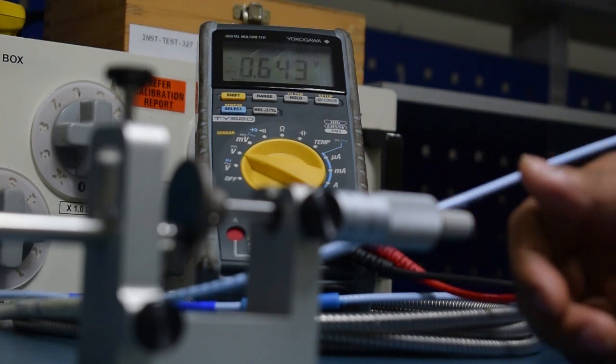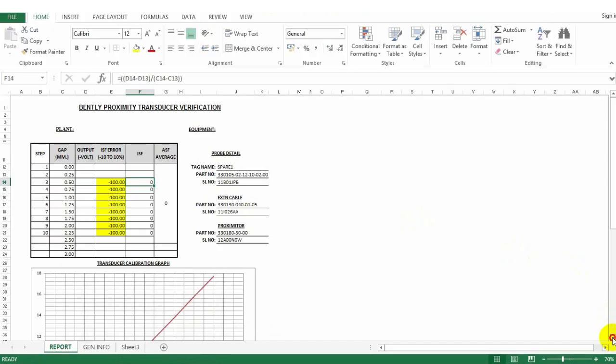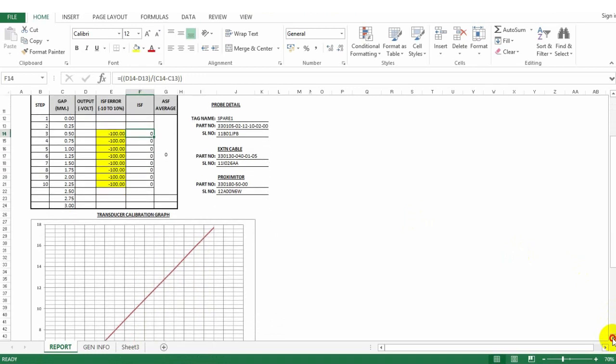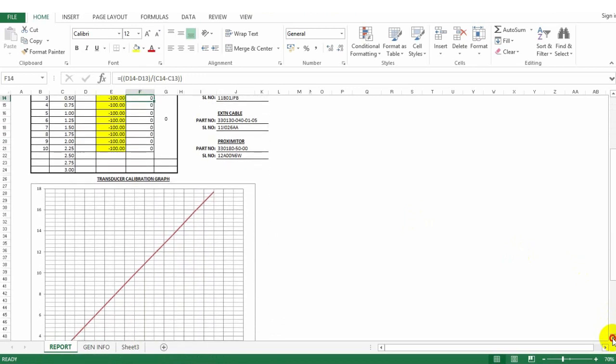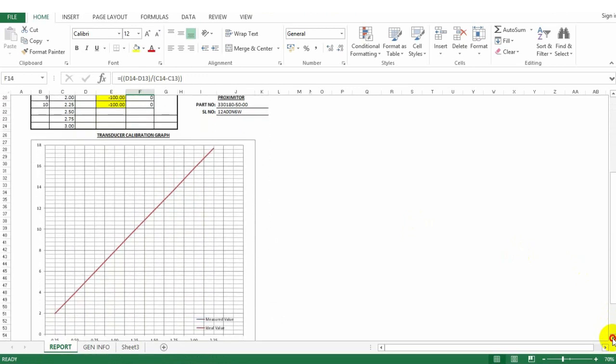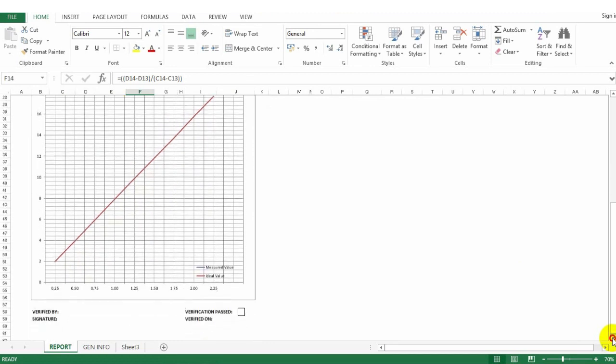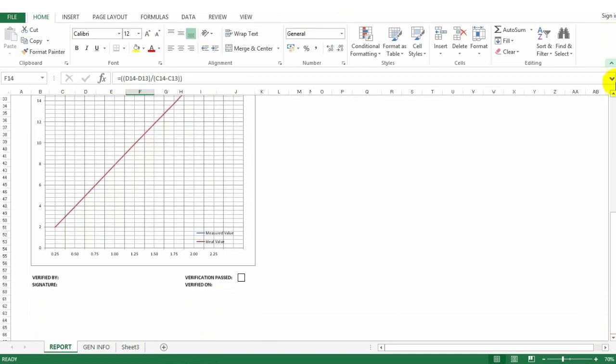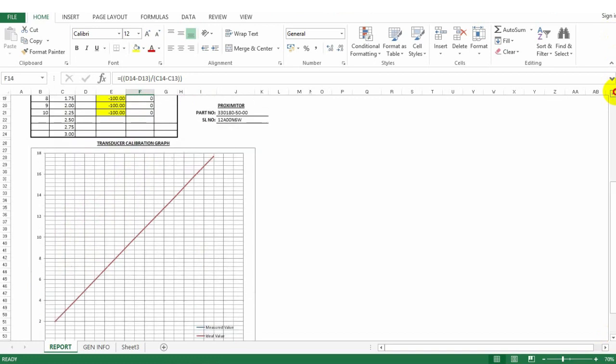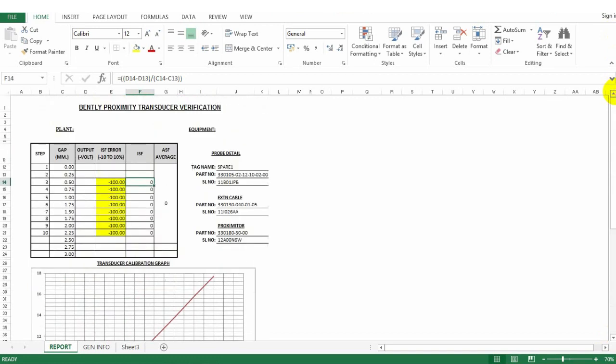To enter in the verification chart, this is the verification chart prepared with Microsoft Excel. Enter the voltage measured for every 0.25 mm increments starting from 0 up to 2.75 mm, which will cover the linear range of transducer. Enter the voltage value measured for zero gap.